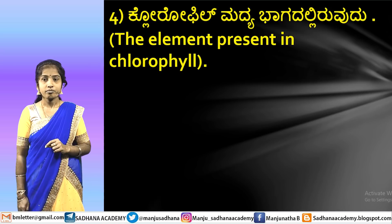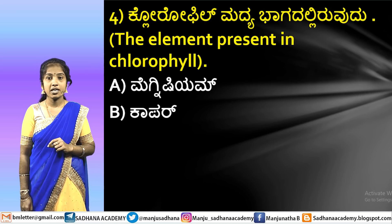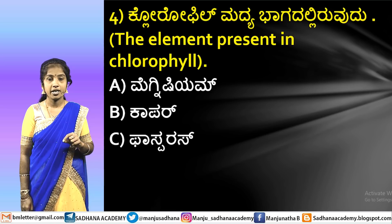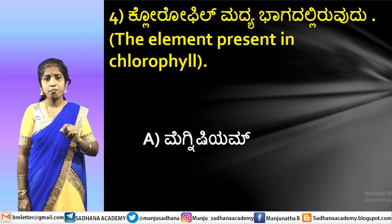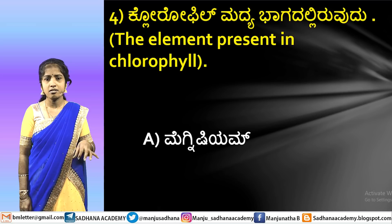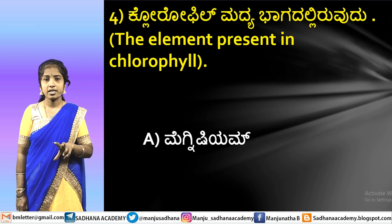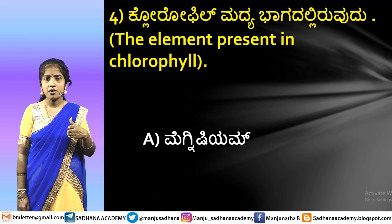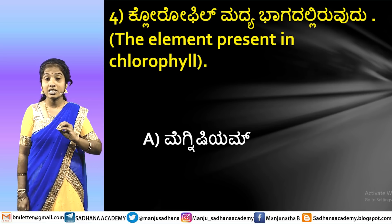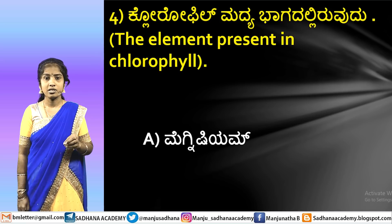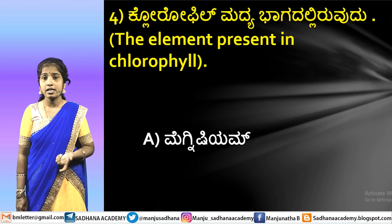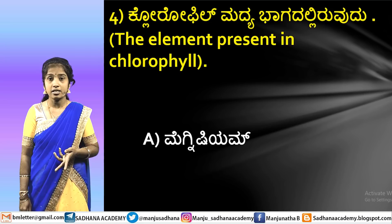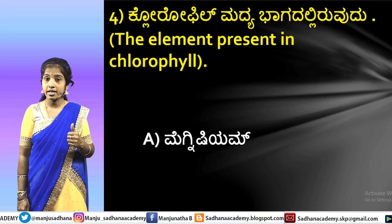The next question: which element is present in chlorophyll? The options are magnesium, copper, phosphorus, and charcoal. Magnesium is a very, very important chelate substance. It is present in the centre of chlorophyll. Because of chlorophyll, photosynthesis — dvithi samshleishan — takes place. Magnesium is the authentic chelate substance present in chlorophyll. So the answer is magnesium.